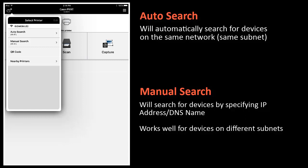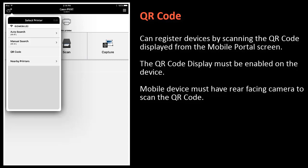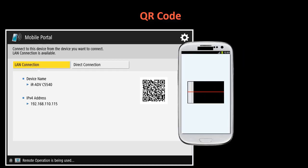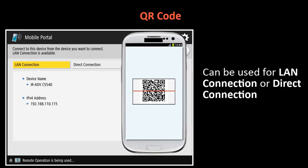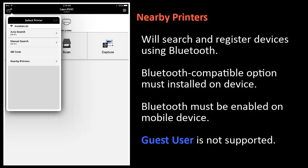A manual search will search for devices by specifying an IP address or DNS name, and works very well for devices on different subnets. With a QR code, you can register devices by scanning the QR code displayed on the mobile portal screen. The QR code display must be enabled at the device, and the mobile device must have a rear-facing camera to scan the QR code. This can be used for a LAN connection or a direct connection. Nearby printers will search and register devices using Bluetooth connections; the Bluetooth compatible option must be installed on the device and Bluetooth must be enabled on the mobile device.